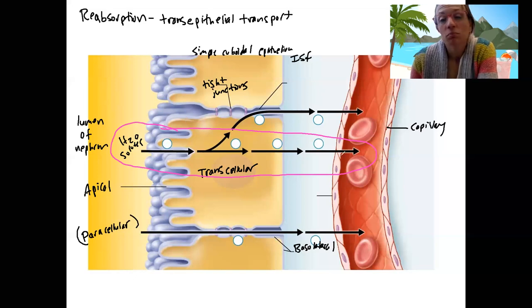How does this occur? Well, it depends on the solute in terms of its chemical properties. So whether it can diffuse through the cell membranes on its own, like Na plus, cannot. Carbon dioxide, for example, something that can.